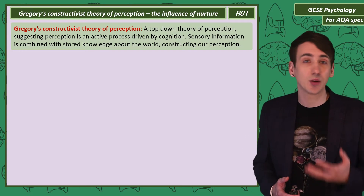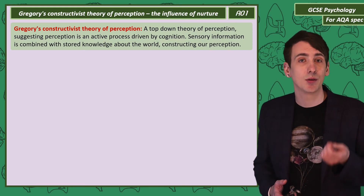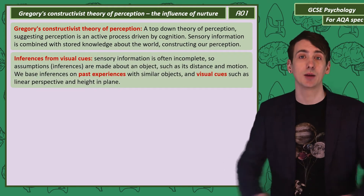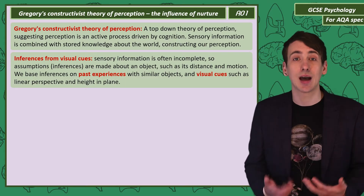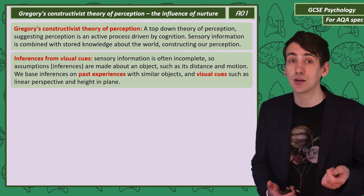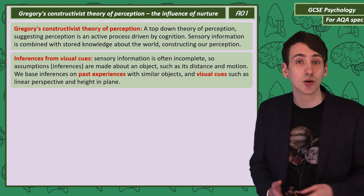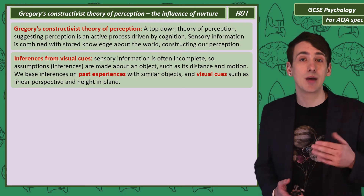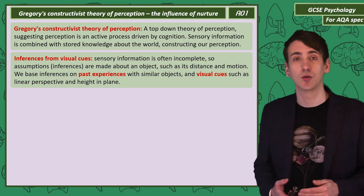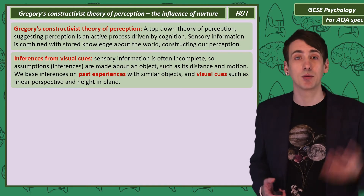This theory suggests we have to construct perception because the sensory information we have about the world is just incomplete. Our brains have to make guesses, or we can say inferences, about factors like distance and motion. And our brains make those guesses from visual cues, so linear perspective and height in a plane.